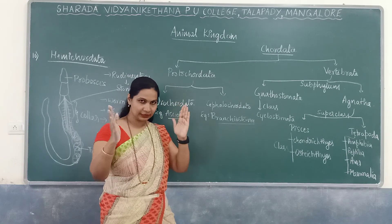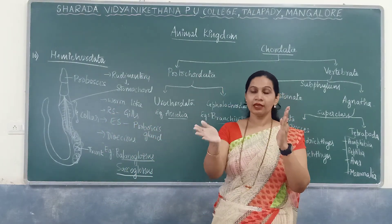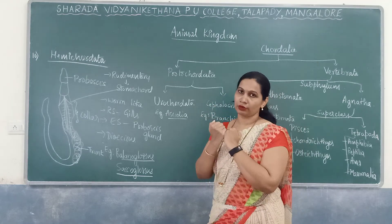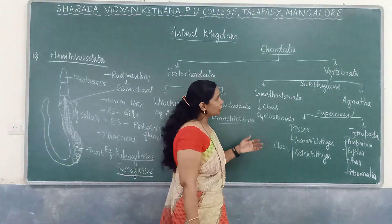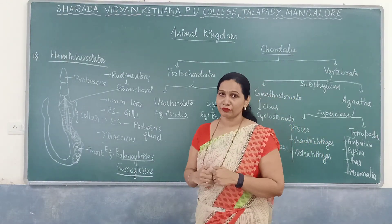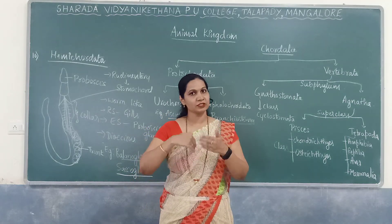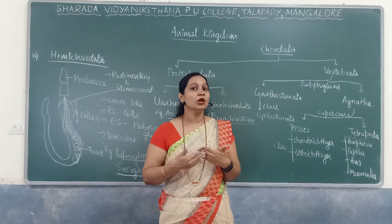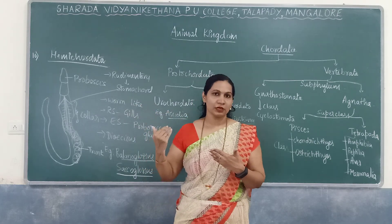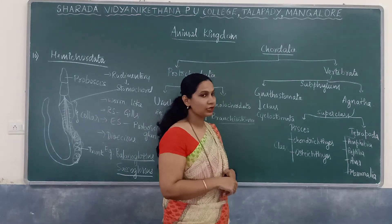There are three divisions: Urochordata, Cephalochordata, and Vertebrata. Urochordata and Cephalochordata together are known as Protochordata. In Vertebrata, the notochord found in the larva is replaced by the vertebral column — what we call the backbone.